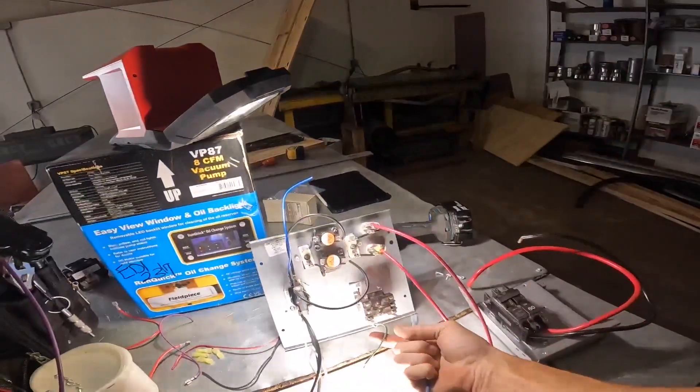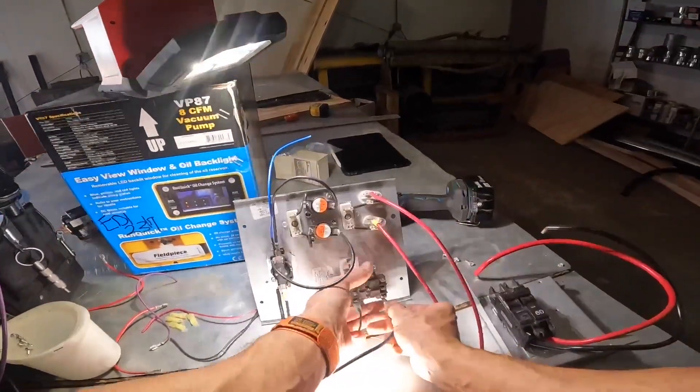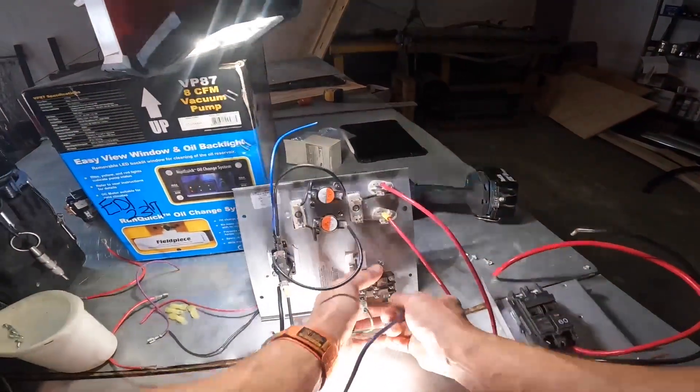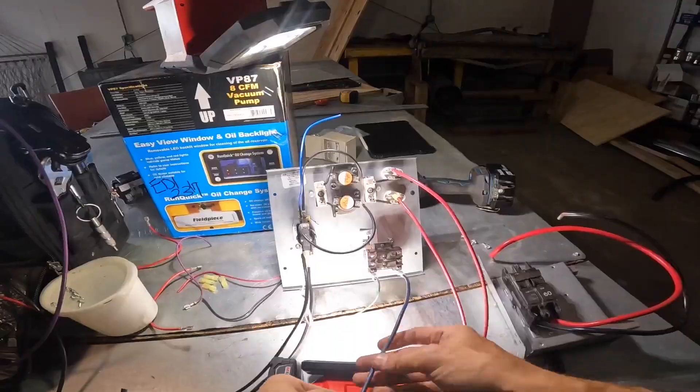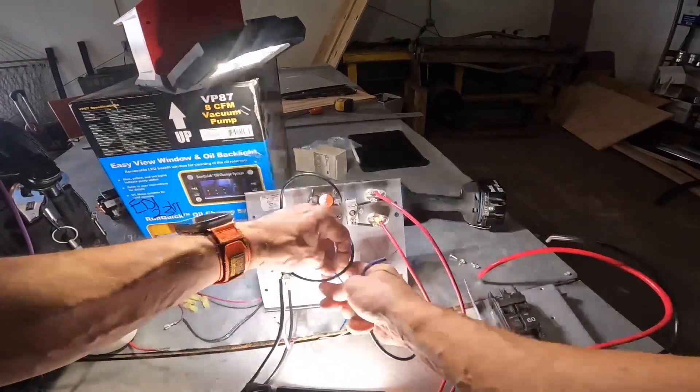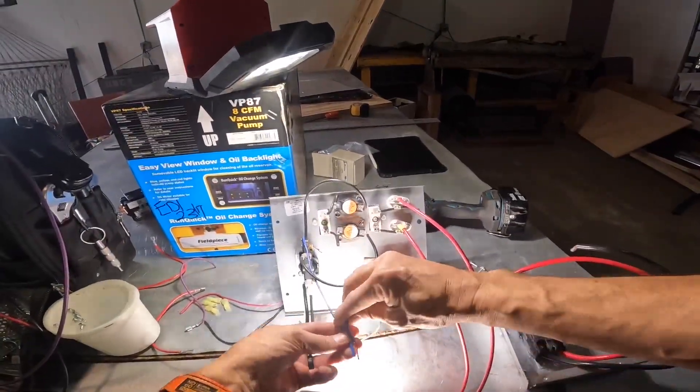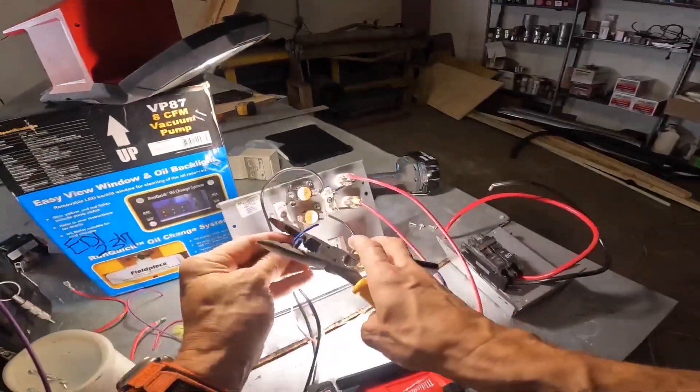And we're going to tie that with the blue over here. Alright, so I got my green hooked up, so that's going to be my thermostat green wire and blue is going to be common. Let's go ahead and put those together.